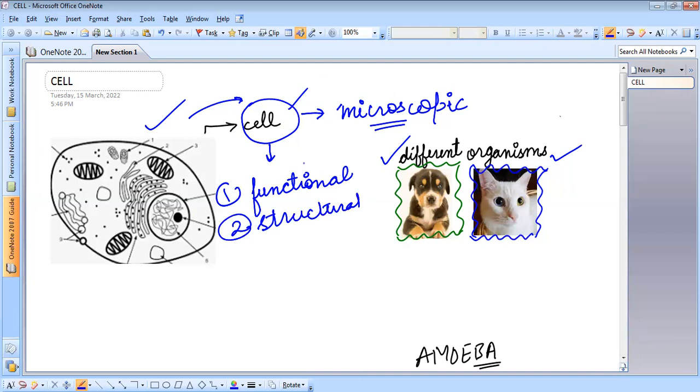So a cell can perform a lot of functions on its own. For example, nutrition, respiration, growth and reproduction. That is why it is known as the basic functional unit of life.